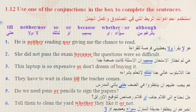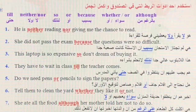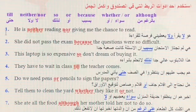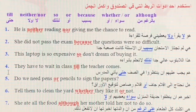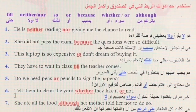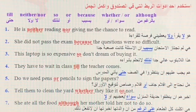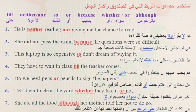تمارين 1.12: whether or — سواء أو — و although — بالرغم من. المطلوب توزيع هذه الأدوات على الجمل. موضوعنا النقطة السادسة: tell them to clean the yard — أخبرهم أن ينظفوا حديقة المنزل — فراغ — they like it — فراغ — not. سواء أعجبهم أو لا، فنستخدم whether or.